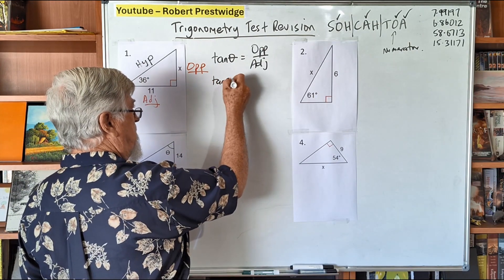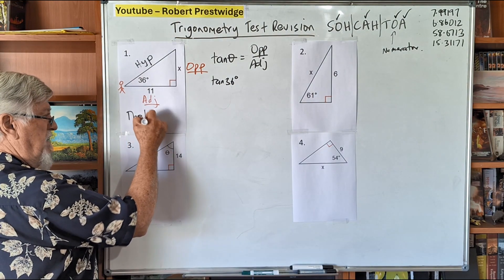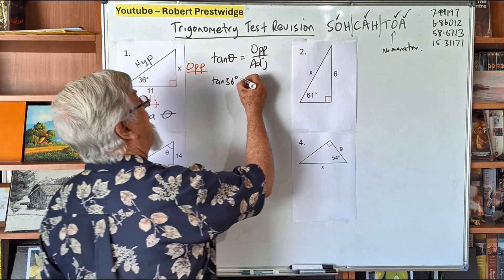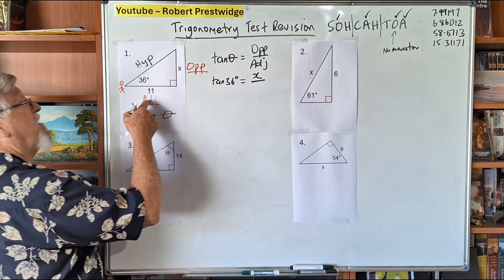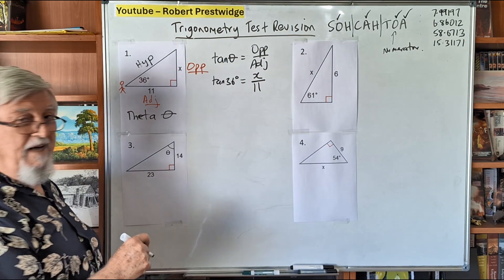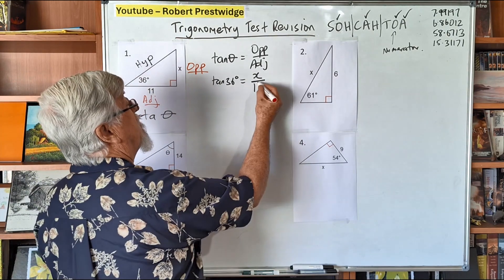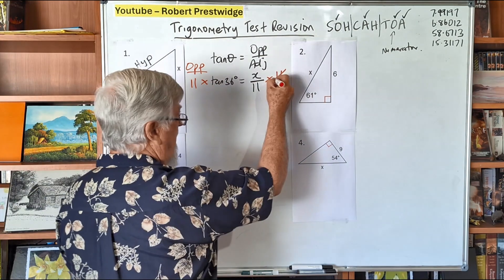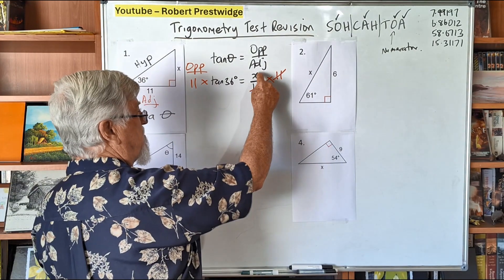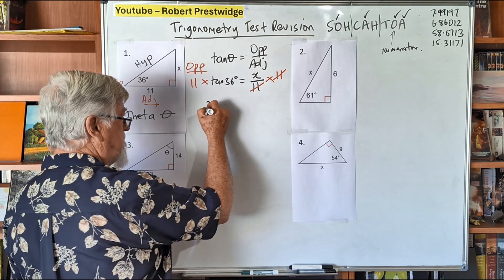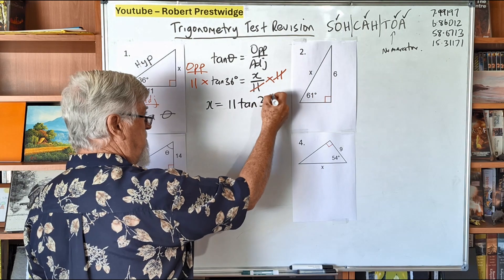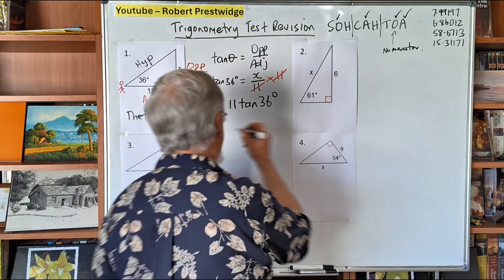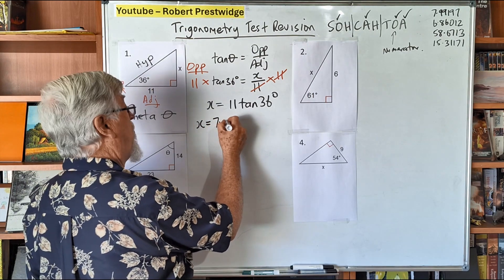So 36 goes in for the angle — theta, the Greek letter, is a circle with a line across it. The opposite becomes X and the adjacent gets the number 11. By then you've nearly got the question done. The only thing left is to solve the equation. Get rid of fractions first whenever you can. How do you get rid of divide by 11? Multiply both sides by 11 — the 11s cancel — and the goal is to get X by itself. X equals 11 times tan 36 — that's the exact answer. The moment you put it in your calculator, you get the approximate answer: 7.99197.